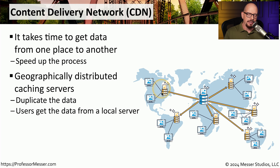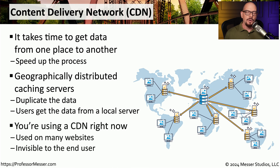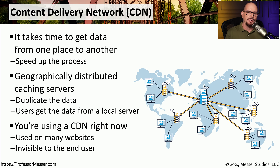If you can have all of your North America users access the North American CDN, it's much faster than having them all go out to a centralized server that might be located in Europe. So if you're watching this video on YouTube or on the Professor Messer website, you're using a CDN right now. It's a way for very small or very large sites to distribute their data to users all over the world and make sure that data is as accessible and efficient as possible.